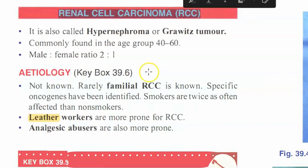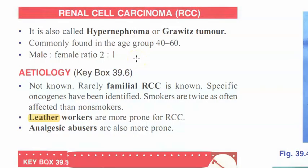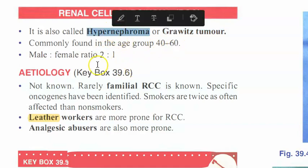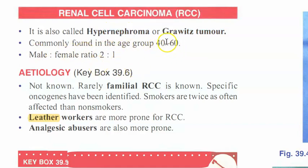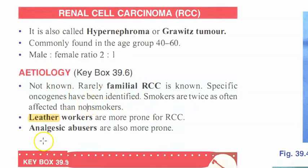In this video we look at renal cell carcinoma - investigations, management, etc. It is also called Grawitz tumor, which may come up in exams. Hypernephroma is an old name. It usually affects people around 50 years of age and beyond, and males slightly more.